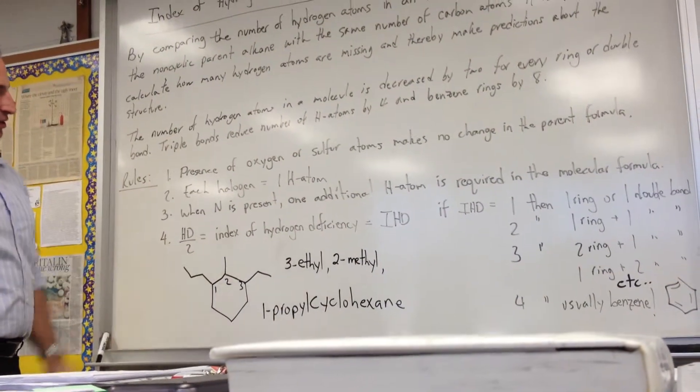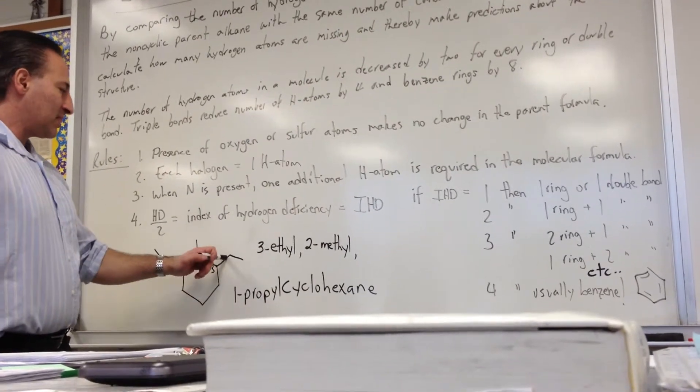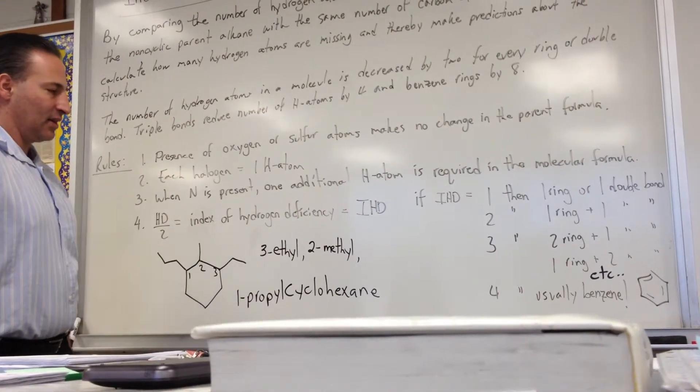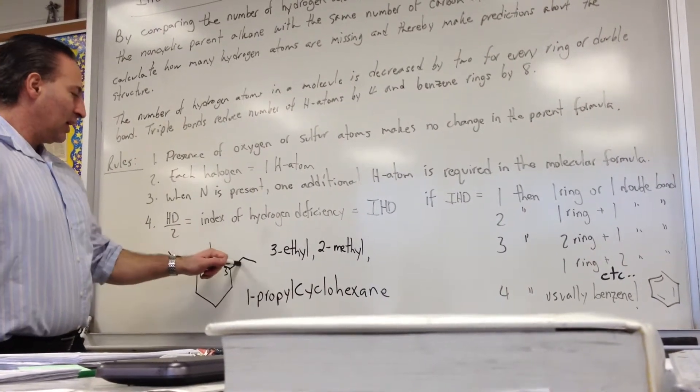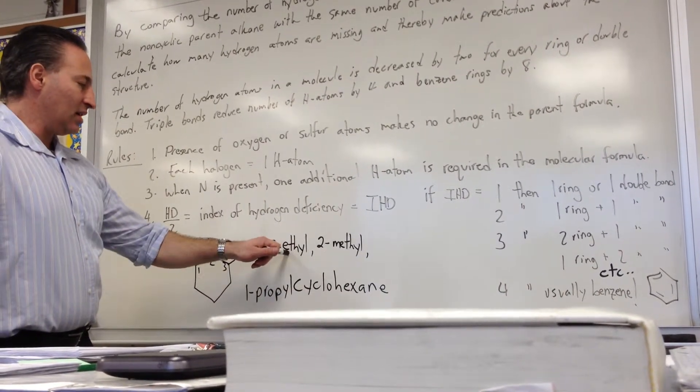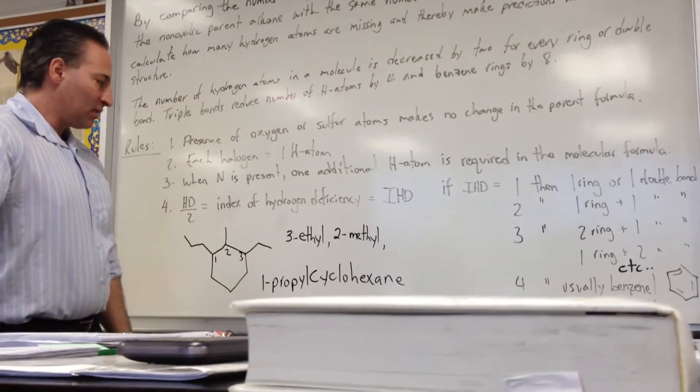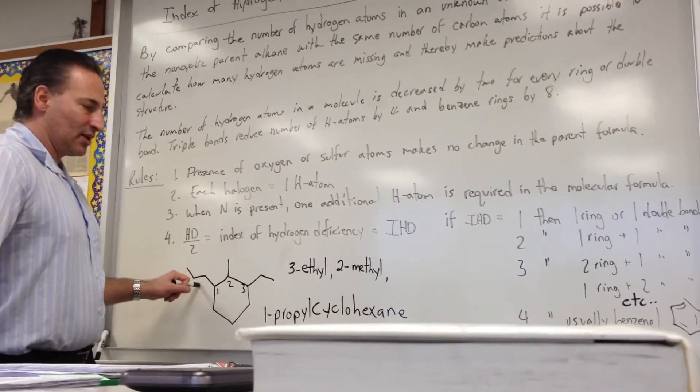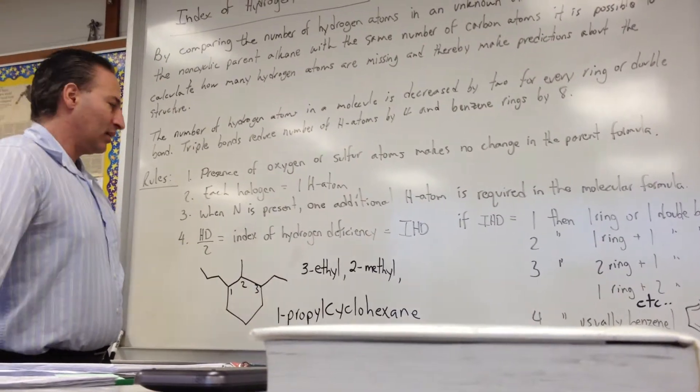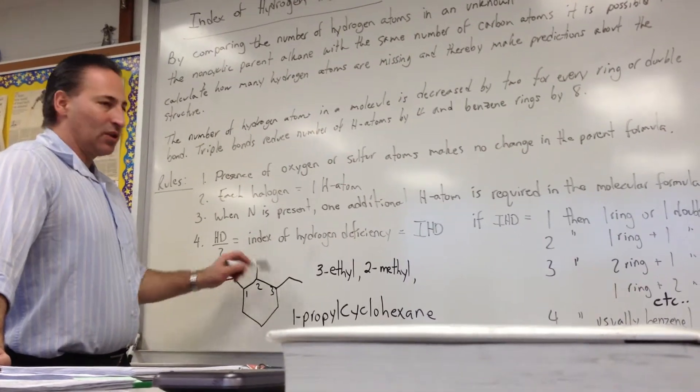The last example, we have 3 different substituents on a cyclohexane. And the one added rule is that you alphabetize the names of the substituents. There's a methyl group, a propyl group, and an ethyl group. Ethyl starts with E, so we're going to place it first even though it's at the third position. How did we establish that it was a third position? You number them according to weight. The heaviest one gets the lowest number, and then you continue the numbering either clockwise or anticlockwise, however it gives you the lowest numbering scheme.